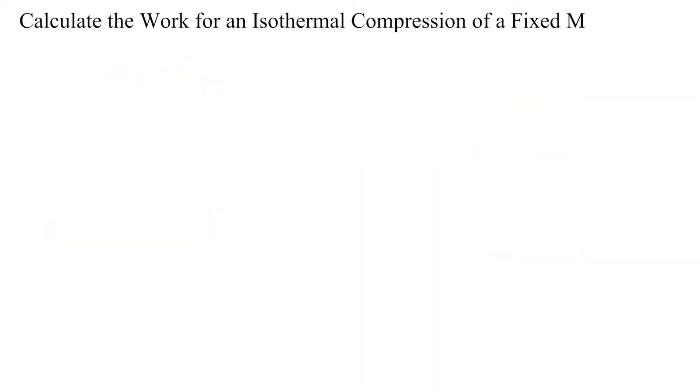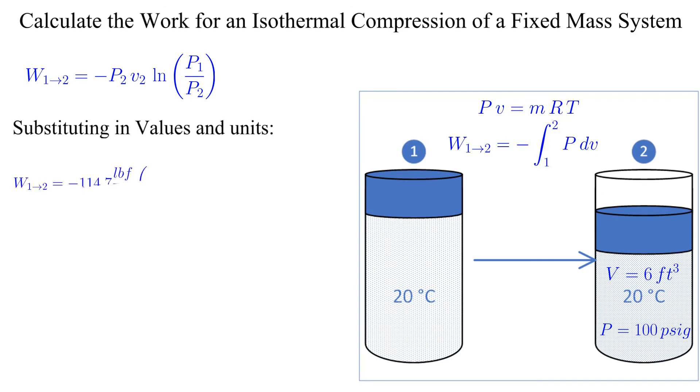Now all that is left is to substitute in the values and units. The work required to compress the air from 14.7 psia to 114.7 psia in an isothermal process is 204,000 foot-pounds.